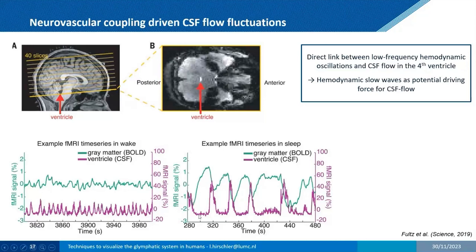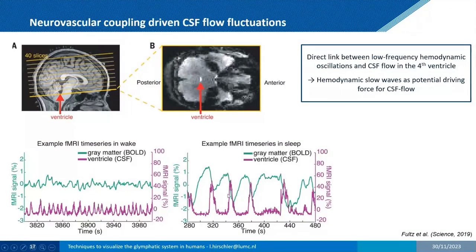The subsequent slices saturate inflowing CSF, making the first slice sensitive only to inflow. They acquired more slices to capture hemodynamic fluctuations of gray matter. In purple are CSF fluctuations, in green the gray matter BOLD fluctuations. During deep slow-wave sleep (stage 3), these fluctuations became very distinct — oscillating roughly every 20 seconds, with CSF fluctuations anti-correlated with blood volume changes: when blood volume goes down and blood flows out, CSF flows in.